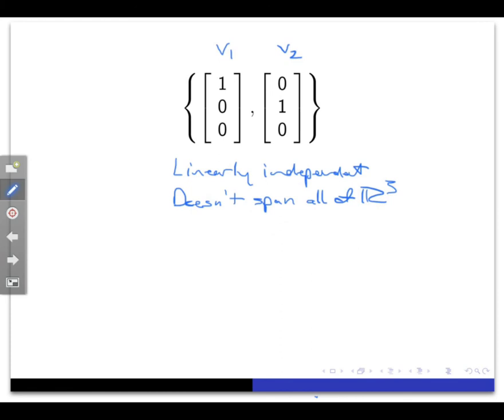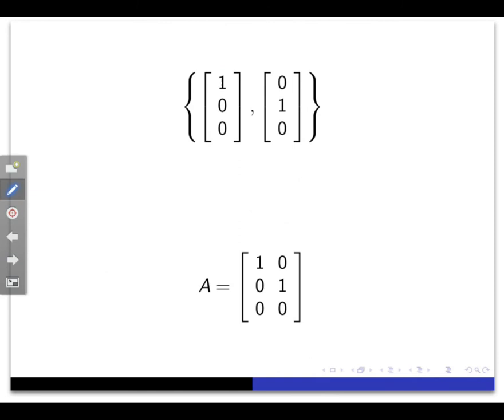Or, more formally, you can put these two vectors into a three by two matrix, and notice that there is not a pivot position in every row. And that means that for some b in R3, the equation AX equals B is going to be inconsistent.